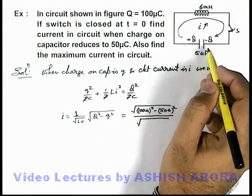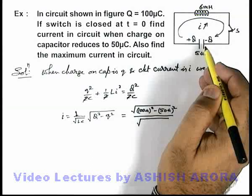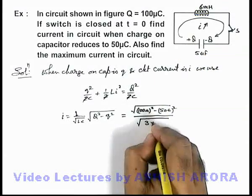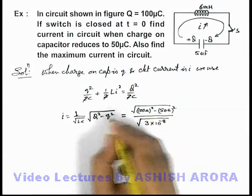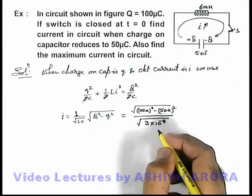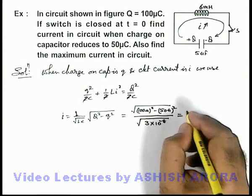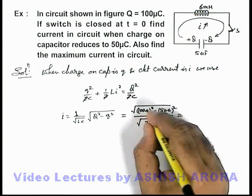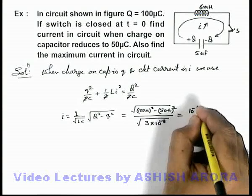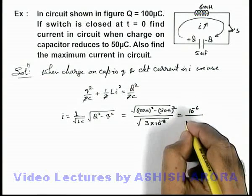So this will be 3 × 10⁻⁸, this is the value of the product of L and C. On further simplifying, what we are getting the value is: here μ can be taken common, that'll be 10⁻⁶ divided by √3.